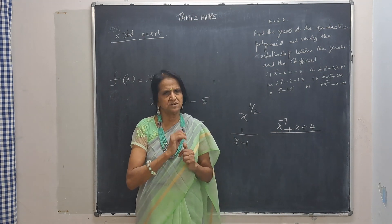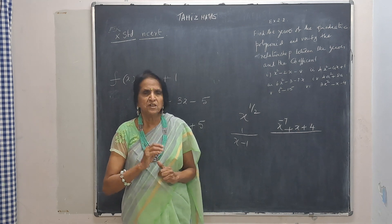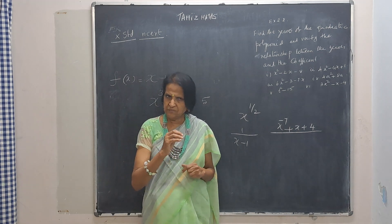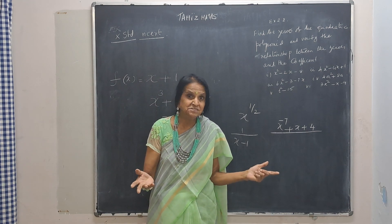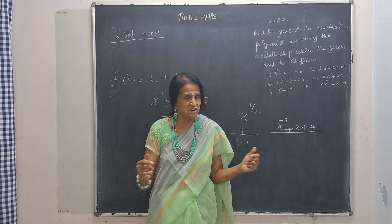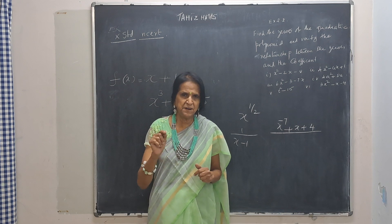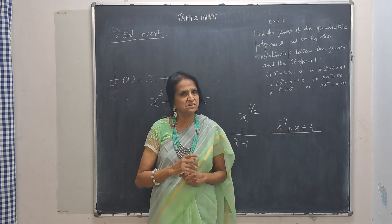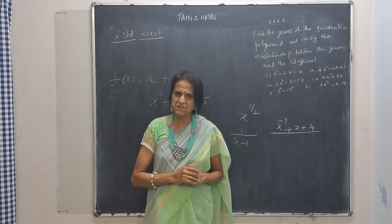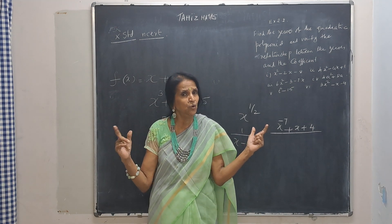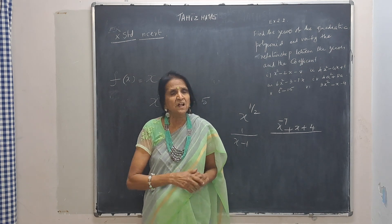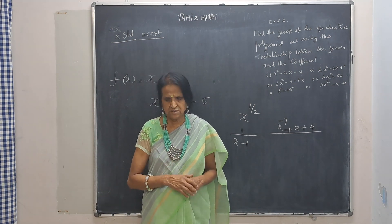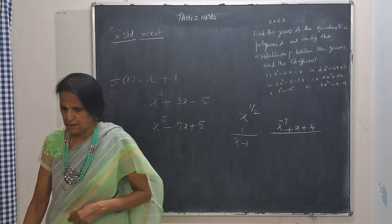A few quick questions: Is x to the power 9 a polynomial? Yes. What is the degree? 9. Is x power 9 plus x power 5 a polynomial? Yes. What is the degree? 9. Is x to the power 7 over 2 a polynomial? No — because 7 over 2 is not a natural number.